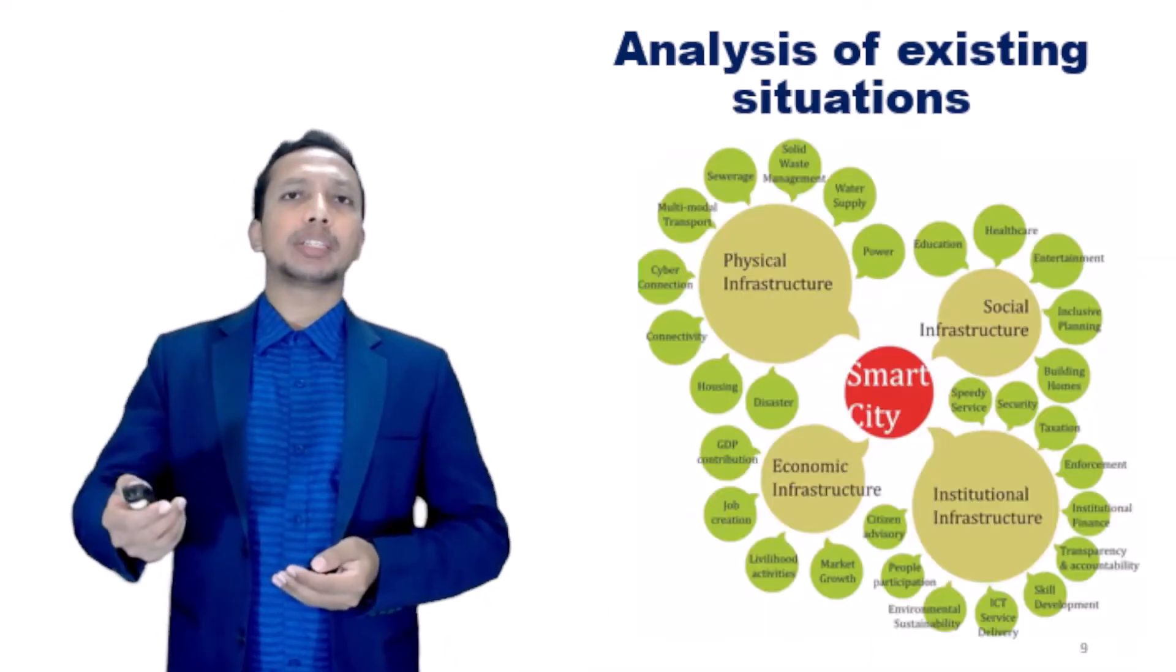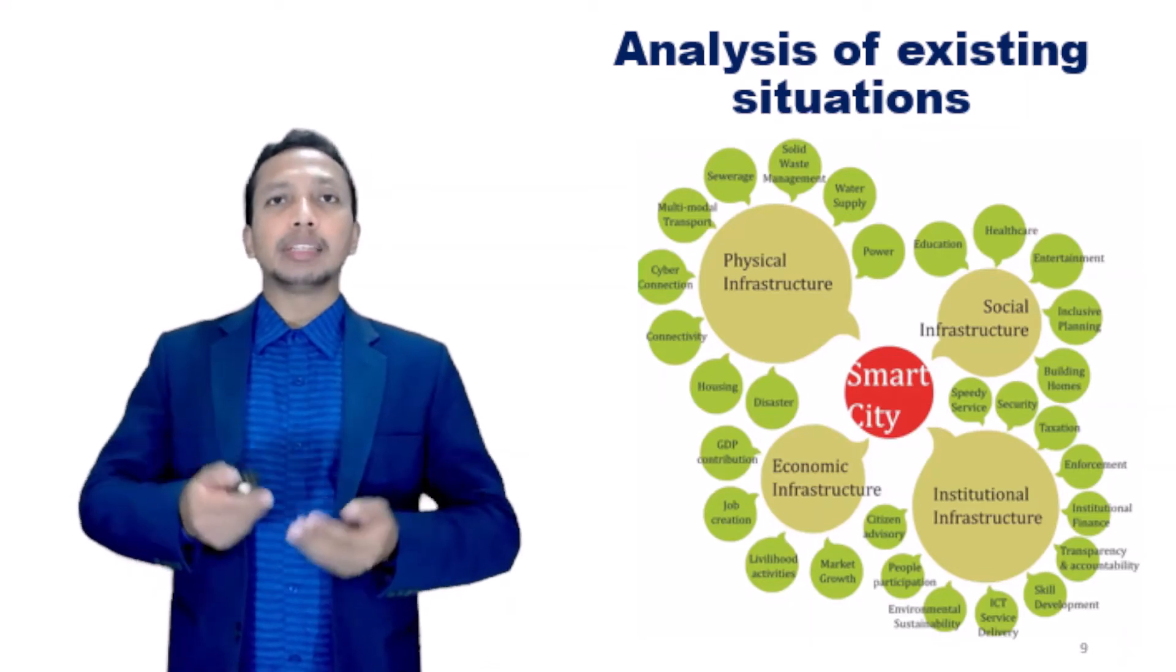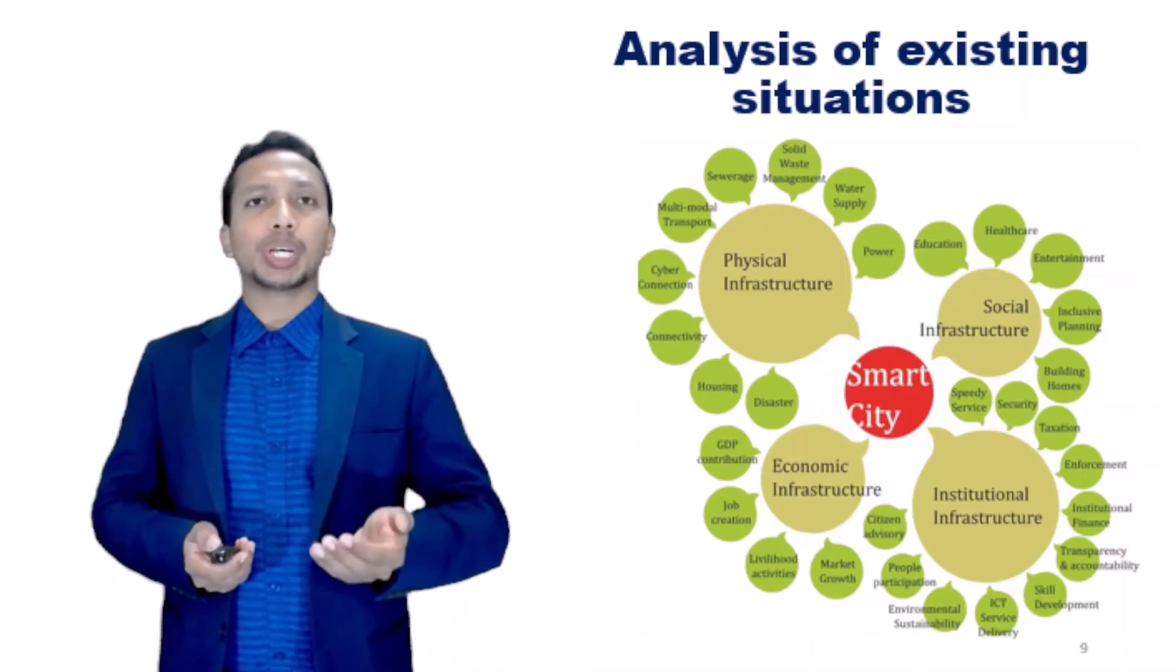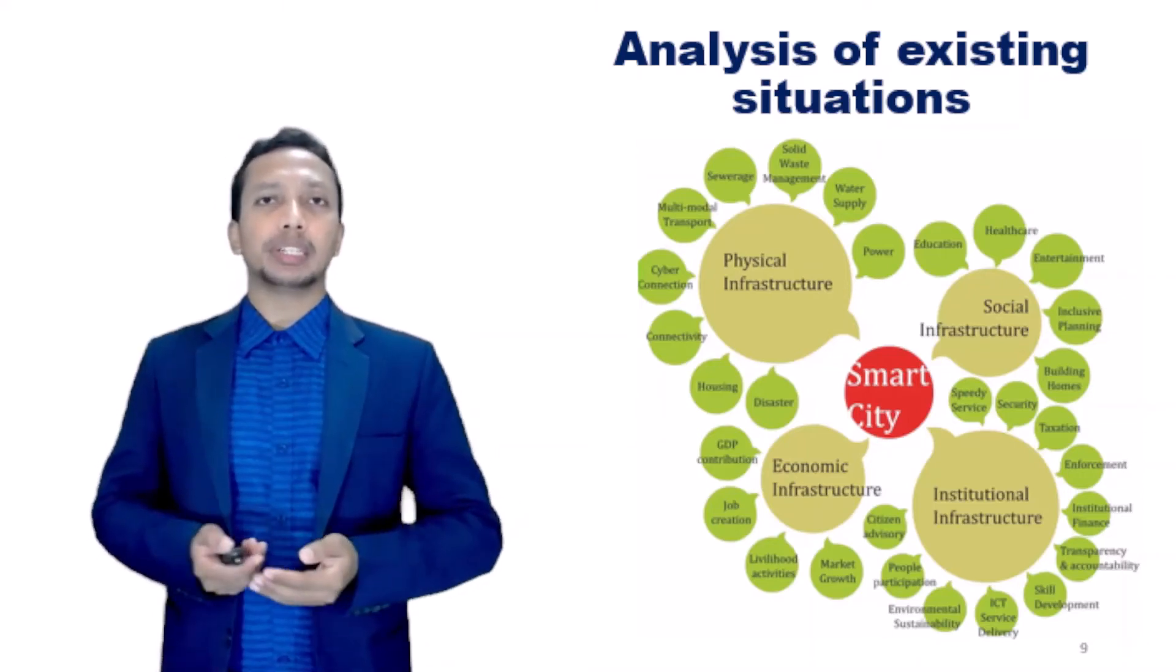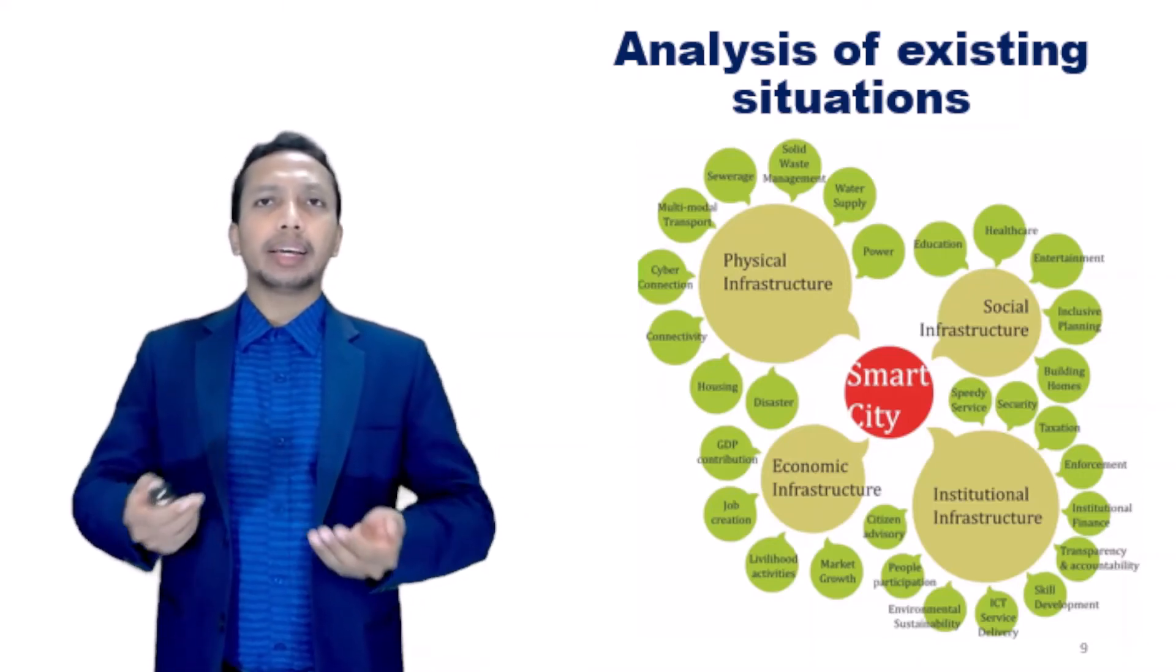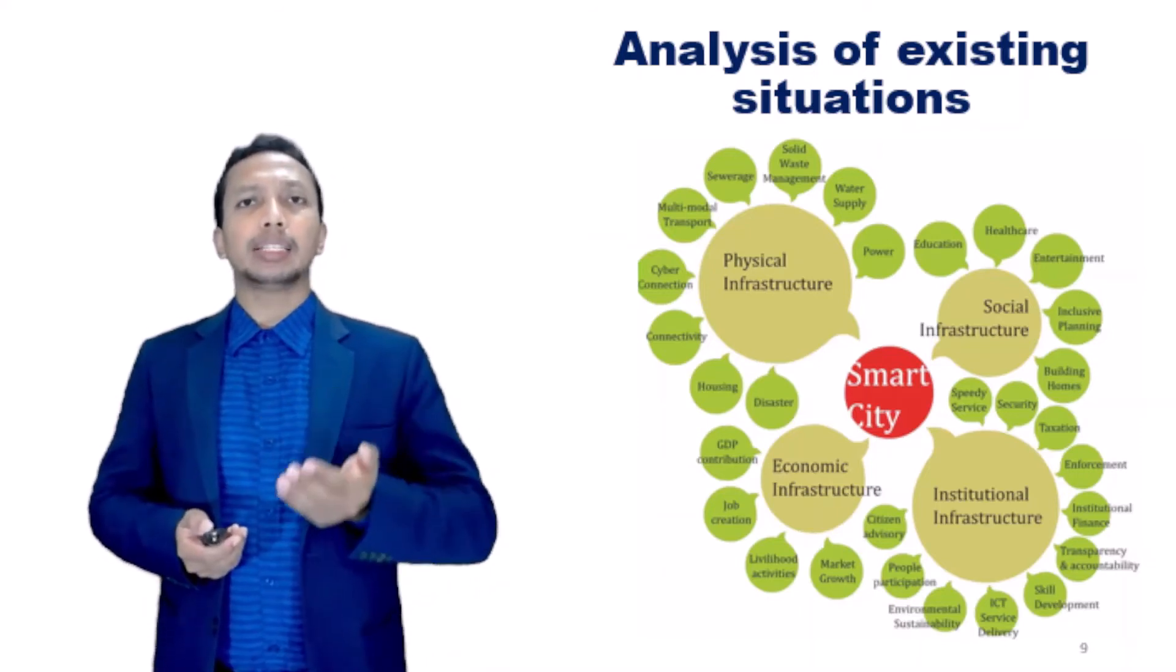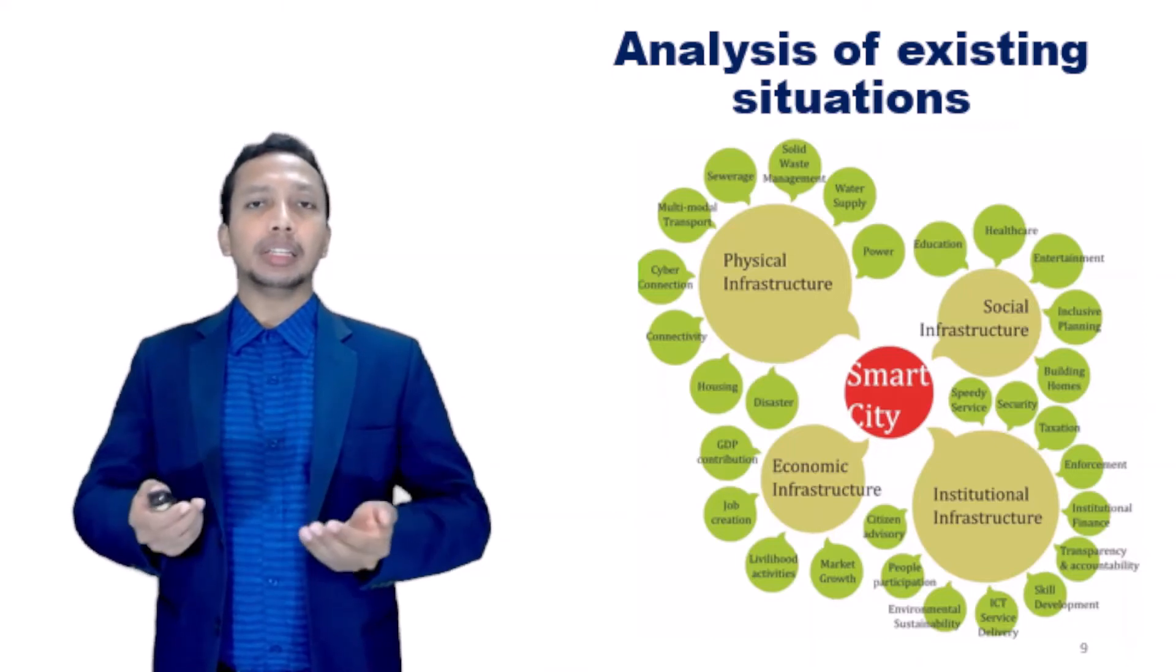Analysis of existing situation. GIS can help to store, manipulate, and analyze physical, social, and economic data of a city. Planners can then use the spatial query and mapping functions of GIS to analyze the existing situation in the city.